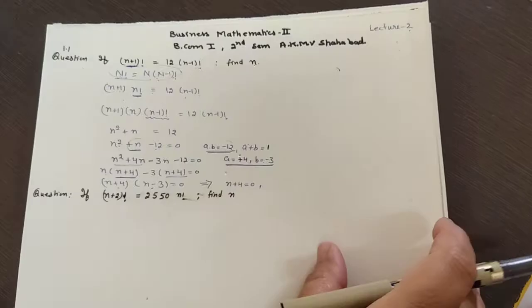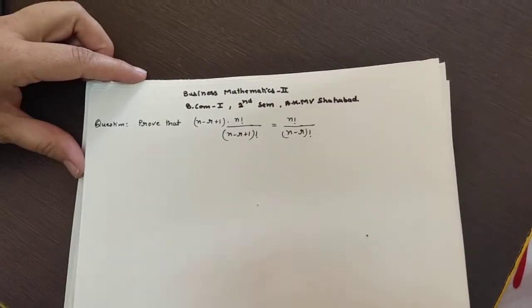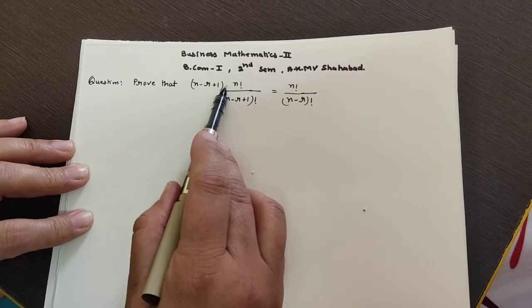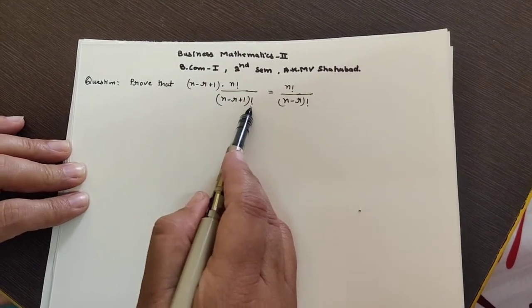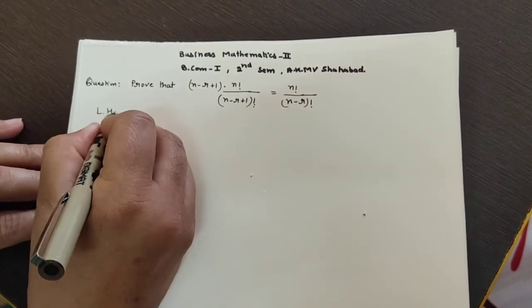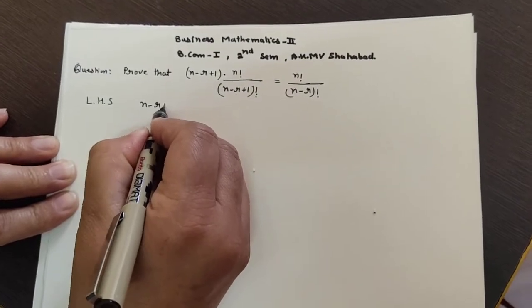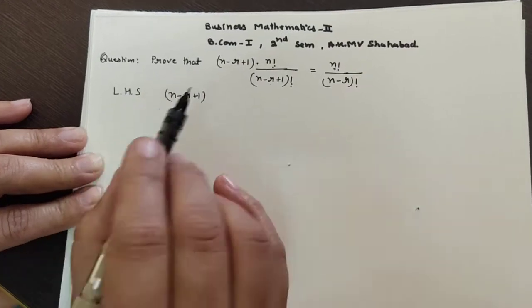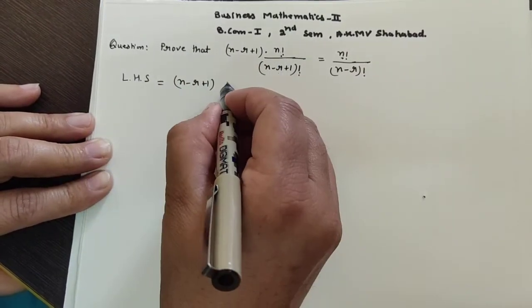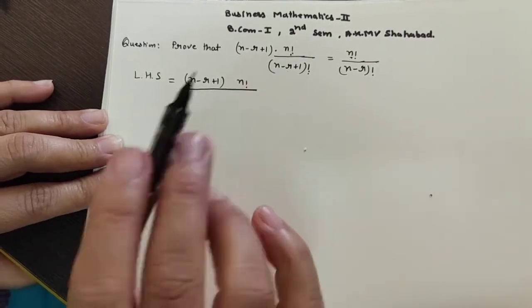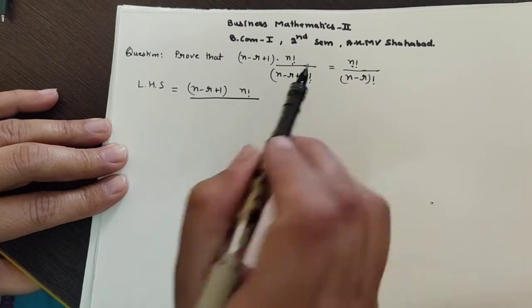Next question: prove that (n-r+1)·n! / (n-r+1)! = n! / (n-r)!. We will take the left hand side: (n-r+1)·n! / (n-r+1)!. The n! in the numerator we will not split; instead we apply the factorial formula to the denominator (n-r+1)!.